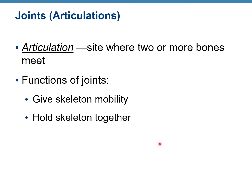Articulation is the site where two or more bones meet. Bones are never connected to another bone without some structure in between them — we don't have a direct connection, one bone to another bone. There is always something in between. It can be a membrane, it can be cartilage. And where two bones come together, that's what we call articulation.